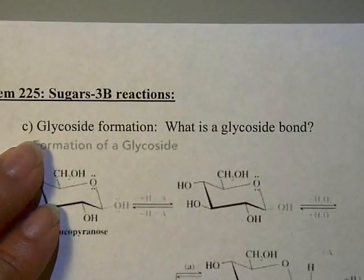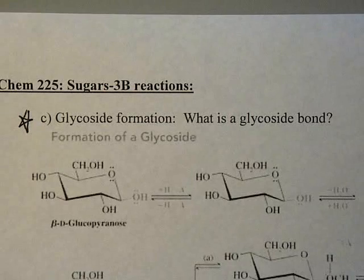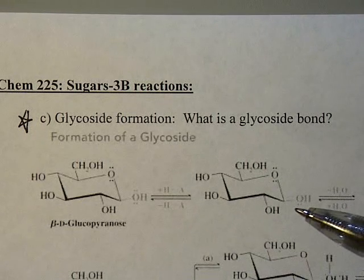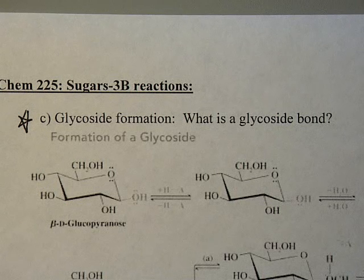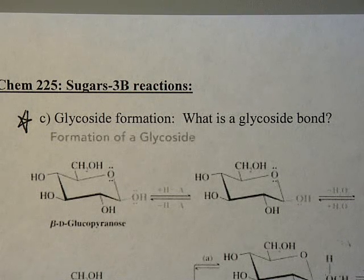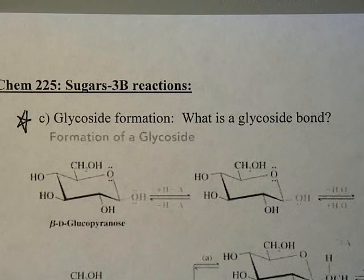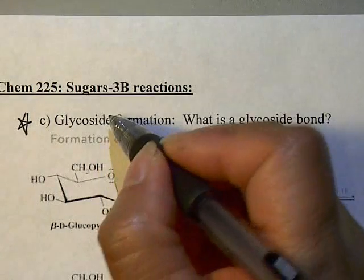Glycoside formation is by far the most important of all the reactions we've covered — I'm putting a star on this. The reason it's so important is that the glycosidic linkage is the most important biologically: a lot of biologically active molecules are connected by glycosidic linkages. For example, it's the basis of how disaccharides and polysaccharides are made, and many drugs that contain a sugar linked to something like a steroid are connected by a glycoside linkage.